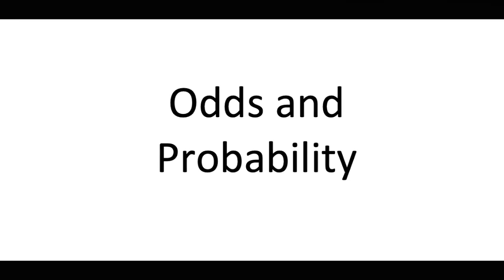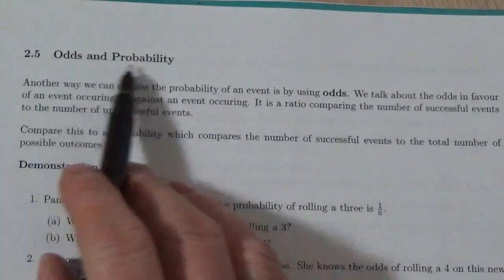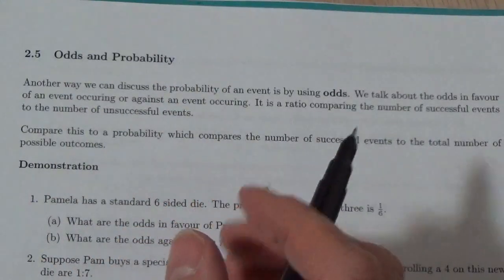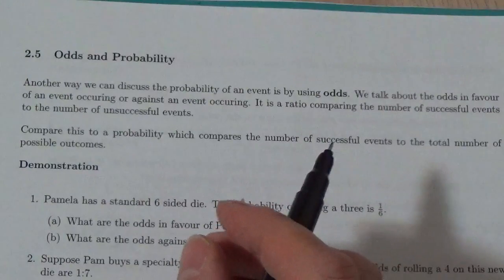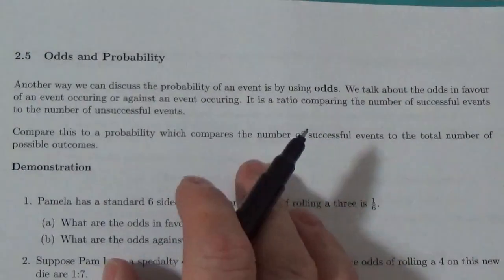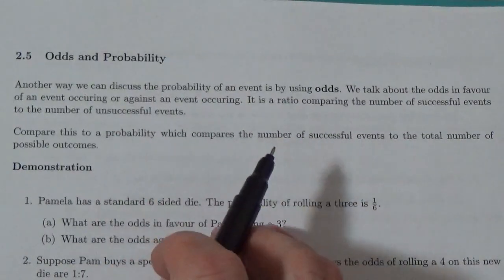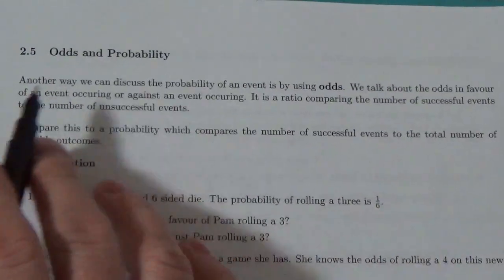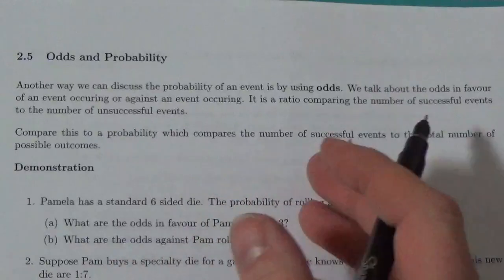In this chapter, we're going to introduce some of the basic ideas of probability. In this lesson, we're going to talk about odds and probability. So talking about odds is another way of discussing the probability of an event, but they're not exactly the same. Sometimes we use these two words interchangeably in our greater culture, but they are actually a little different.